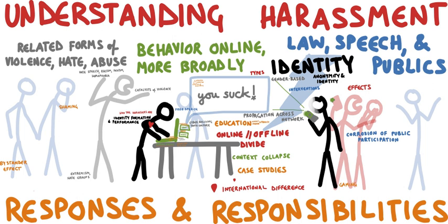There are instances where committing a crime using a computer can lead to an enhanced sentence. For example, in the case of United States v. Neil Scott Kramer, Kramer was served an enhanced sentence according to the US Sentencing Guidelines Manual Section 2G1.3(b)(3) for his use of a cell phone to persuade, induce, entice, coerce, or facilitate the travel of the minor to engage in prohibited sexual conduct. Kramer argued that this claim was insufficient because his charge included persuading through a computer device and his cellular phone technically is not a computer.